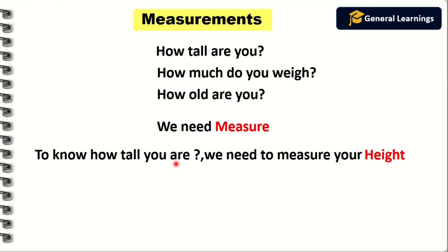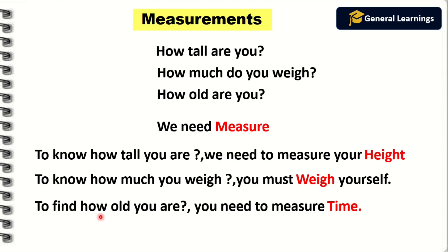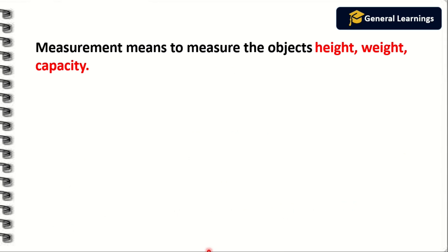To know how tall you are, we need to measure your height. To know how much you weigh, you must weigh yourself. To find how old you are, you need to measure time. So, measurement is nothing but to measure an object's height, weight, and capacity.